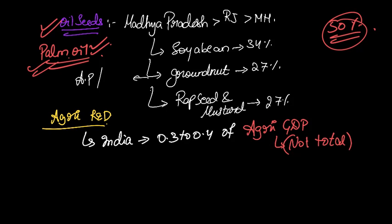Now coming back to the trivial aspects - which state has the largest oil seeds production? Again, it is Madhya Pradesh, along with pulses production. The second state is Rajasthan, and the third one is Maharashtra.